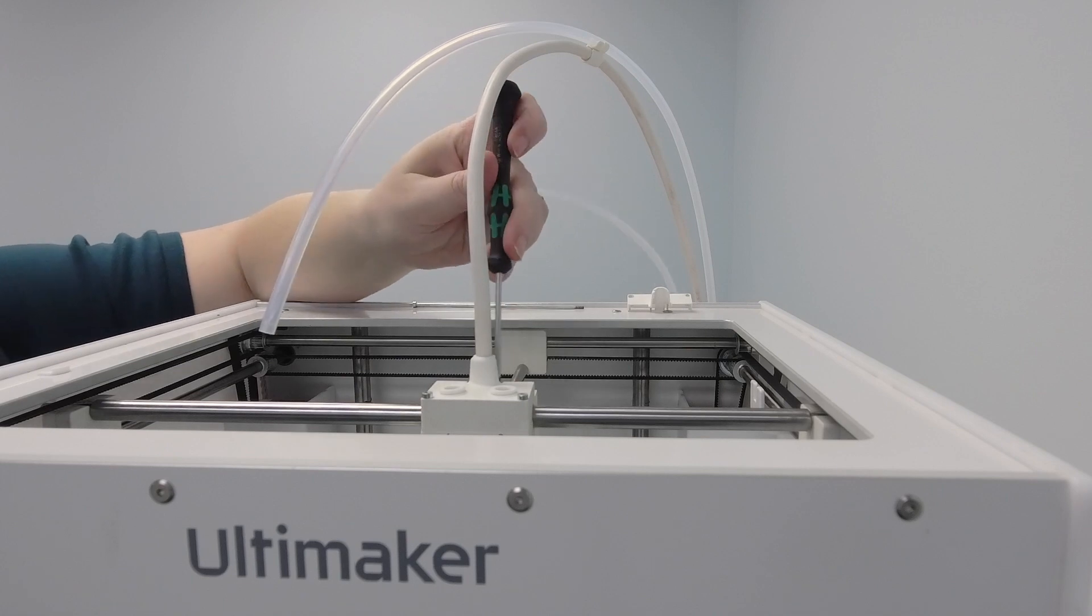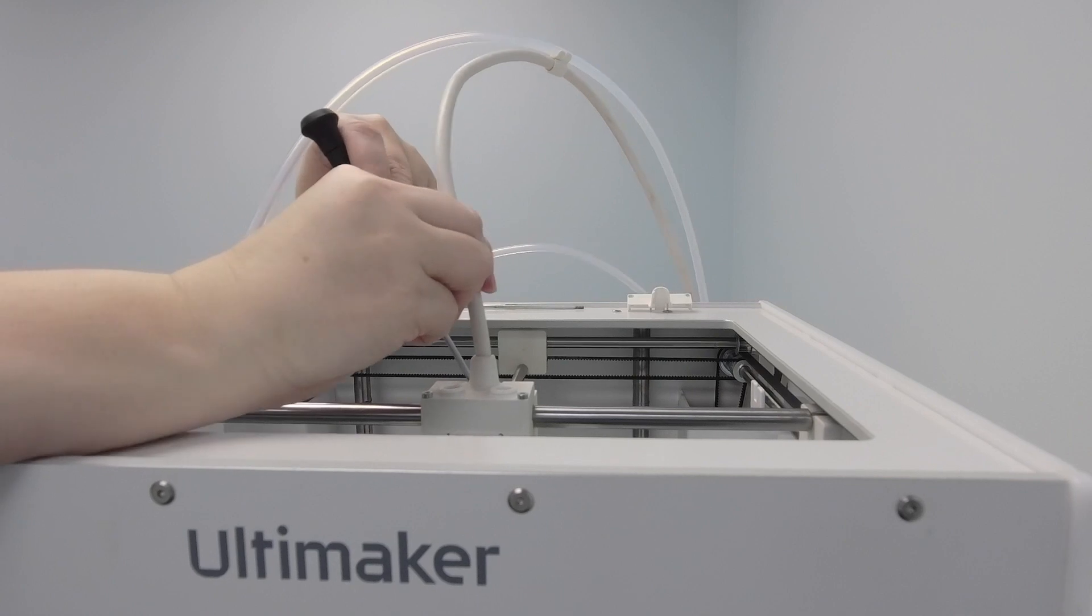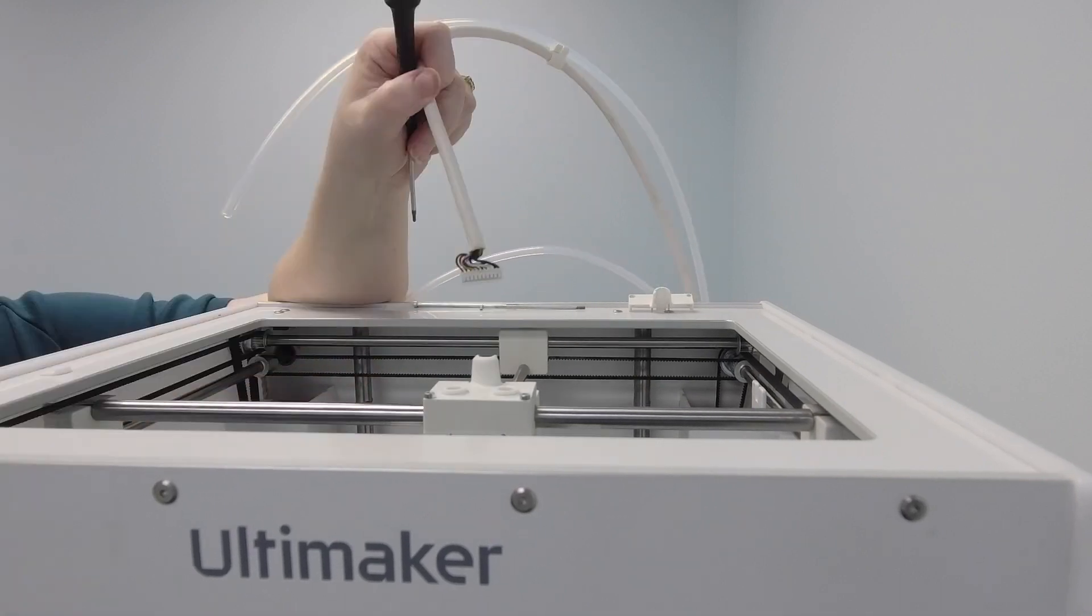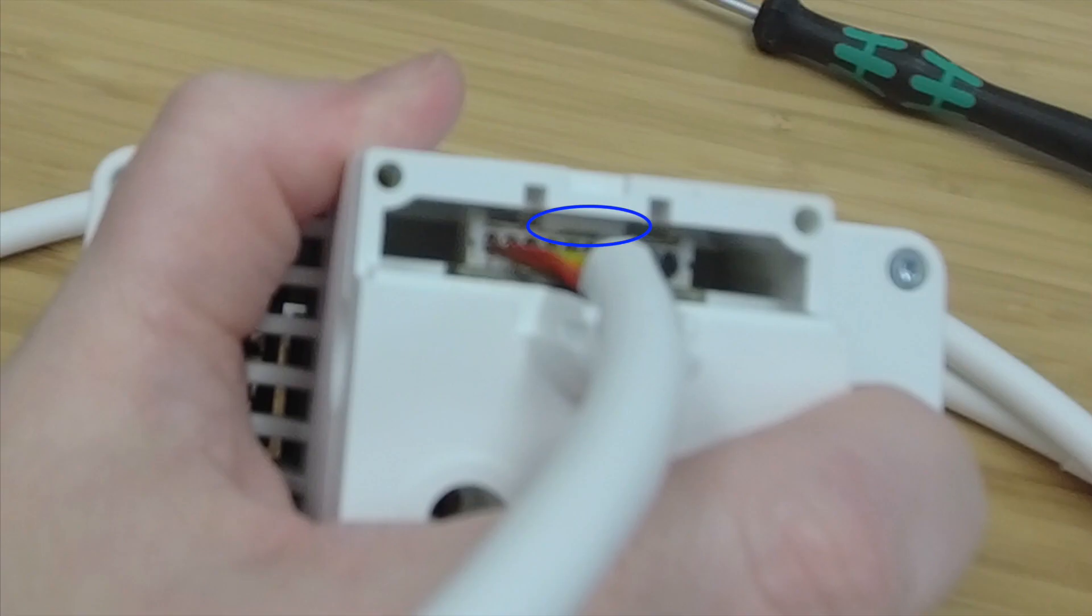Use your screwdriver to apply pressure to the clip on the back of the printhead cable to help release it from the printhead PCB. The cable should be easy to pull out when you've taken the tension off the clip. Time for a close-up.